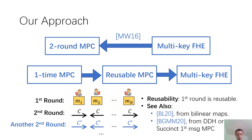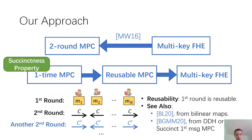In this work, we try to construct a reusable MPC from one-time MPC. However, to make our transformation work, we need the one-time MPC to satisfy a special succinctness property that I will explain later. For the rest of the talk, I will first show the construction from reusable MPC to multi-key FHE, and then show the transformation from one-time MPC to reusable MPC.